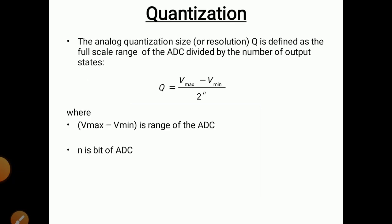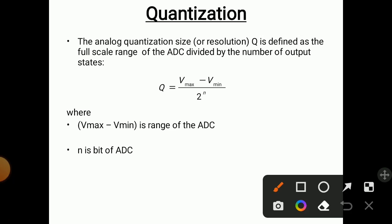The analog quantization size Q is defined as the full-scale range of the ADC divided by the number of output states. The formula is Q = (Vmax − Vmin) / 2^N, where N is the number of bits of the ADC and Vmax − Vmin is the range of the ADC. This formula is used for determining the resolution of quantization, or the quantization size.